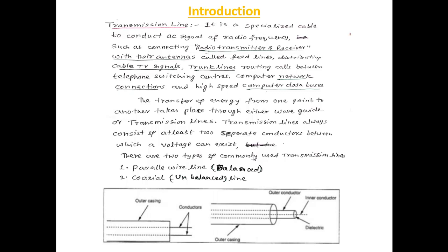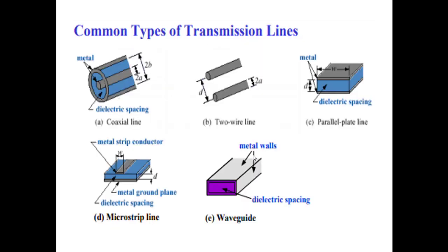Transmission lines always consist of at least two separate conductors between which a voltage can exist. There are two commonly used types: one is the parallel wire line, which is a balanced line, and the other is the coaxial cable or line, which is an unbalanced line. Common examples are coaxial line, two-wire line, parallel plate line, microstrip line, and waveguides.